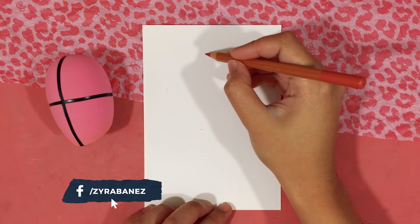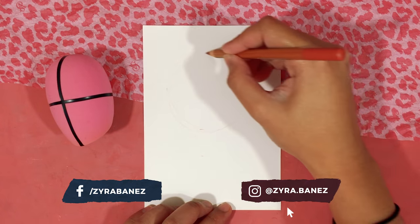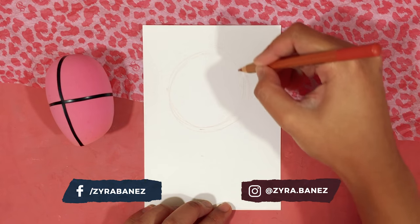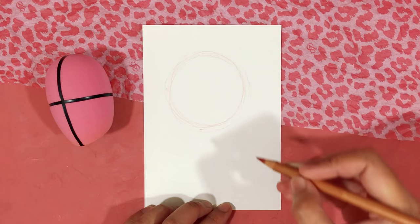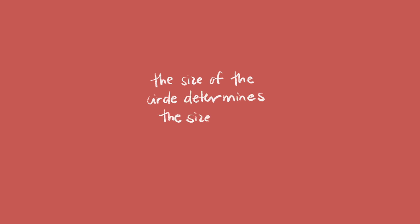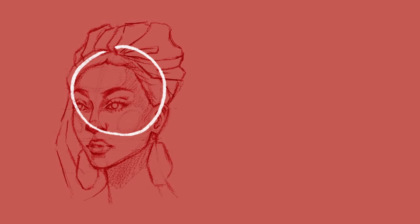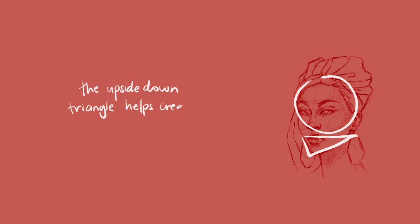Now let's actually start using this rule to draw the face. Starting with the head shape, I like to break it down into two basic shapes: the circle and the upside-down triangle. The size of the circle defines how big or small the head will be — the bigger the circle, the bigger the head; the smaller the circle, the smaller the head. Then the upside-down triangle helps create the bottom half of the face.